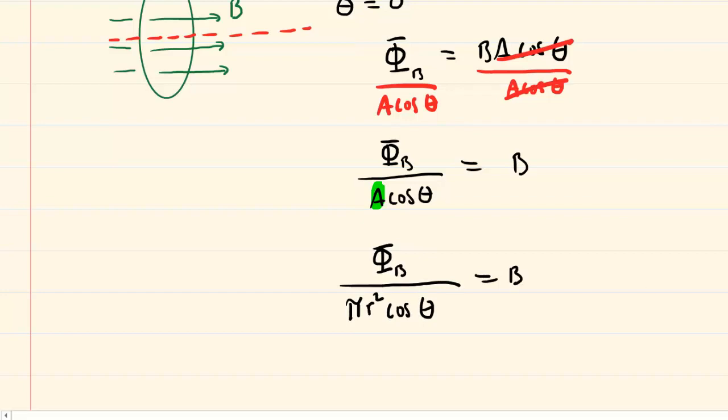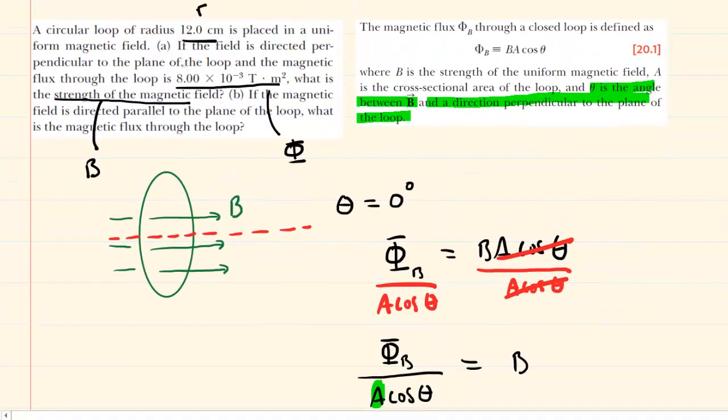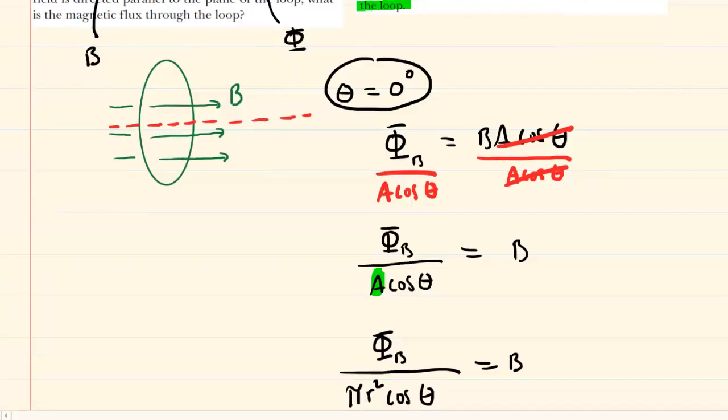We are now ready to plug in the known values. We have the magnetic flux value right here, the radius, and then we determined the angle as well. So let's plug these values into our equation.